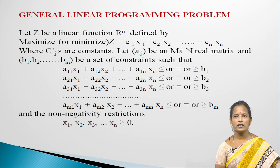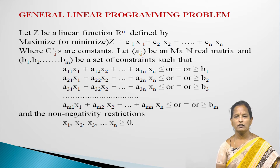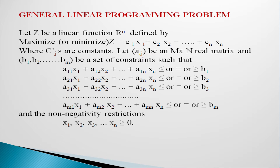Let aij be an m by n real matrix and b1, b2, ..., bm be a set of constraints such that a11x1 plus a12x2 ... a1n xn less than or equal to, equal to, or greater than or equal to b1; and similarly for all rows up to am1x1 plus am2x2 ... amn xn less than or equal to, equal to, or greater than or equal to bm, and the non-negativity restrictions x1, x2, ..., xn greater than or equal to 0.